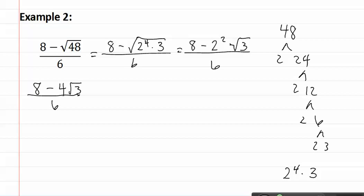Now, once again, I can't just start reducing, because there is a subtraction here, which means there is more than one term, and we must factor something out. Let's factor out a four, leaving us with two minus square root three over six.